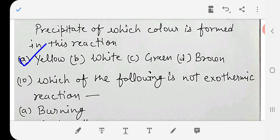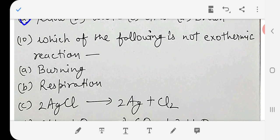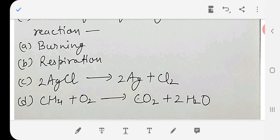Which of the following is not exothermic reaction? Burning, respiration, silver chloride gives silver and chlorine, or methane plus oxygen gives carbon dioxide and water. The answer is C, because this is photolytic decomposition reaction, not exothermic.